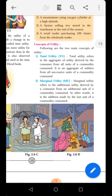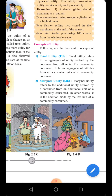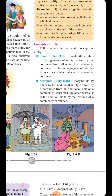Total Utility is the aggregate — the addition — from all the successive units of a commodity consumed. 'Successive' means additional, or the next units. Whatever commodities have been consumed, and whatever utility has been grabbed while consuming them — its addition, in aggregate, is called Total Utility.